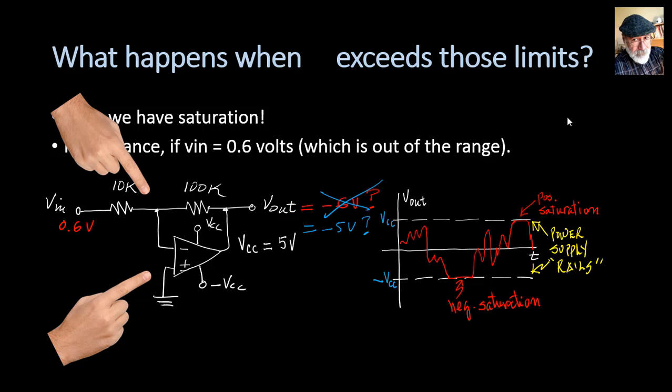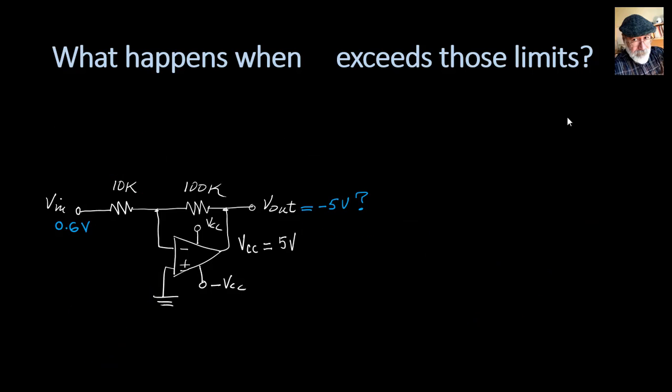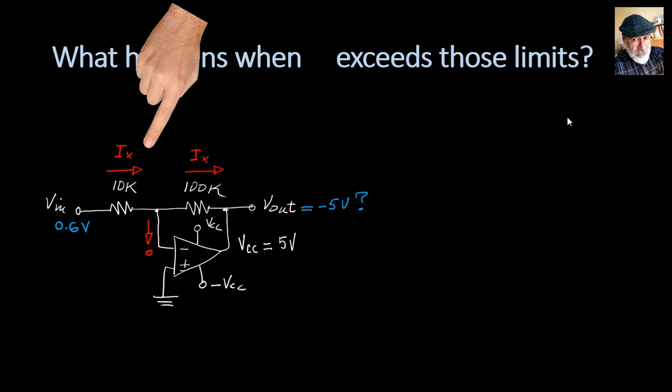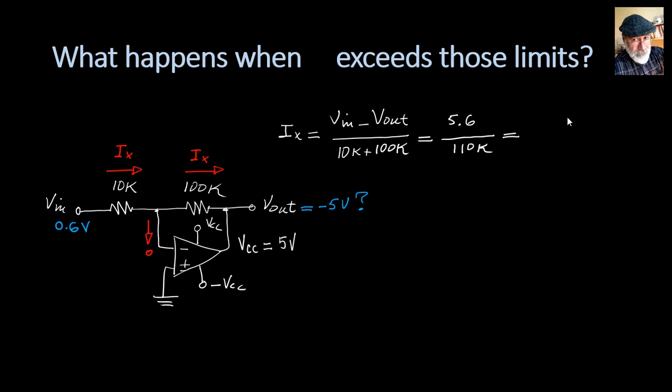The input current here is zero, so the same current Ix flows through both resistors. Computing that current is simply using Ohm's law. Ix is Vn minus Vout divided by the total resistance. Ix is 51 microamperes.